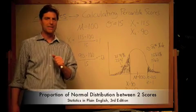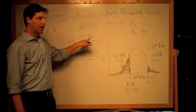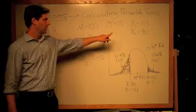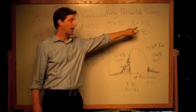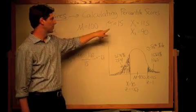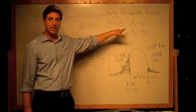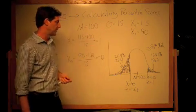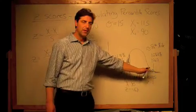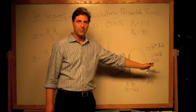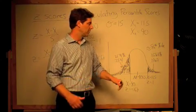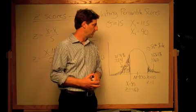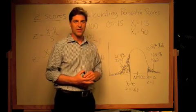All right, so in the last example, we calculated a Z-score for an IQ score of 115, an individual score, when the mean is 100 and the standard deviation of the population is 15. And we found that the percentage of scores that we would expect to be 115 or above in a normal distribution is 15.87%.